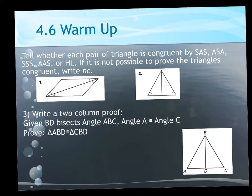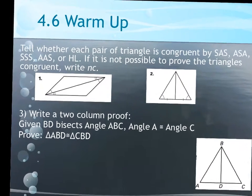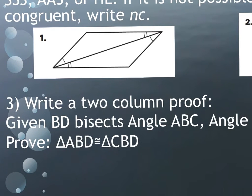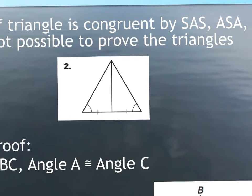So one and two are just simple yes or no answers. If they're not congruent, you write 'not congruent.' If yes, you give which postulate. If you look at number one, are those two triangles congruent? Yes. What's your reasoning? Angle-side-angle. What's there that's not labeled that, if this was a proof, you'd have to label? The reflexive side. Train yourself to look for the easy stuff like reflexive side, vertical angles, all that stuff.